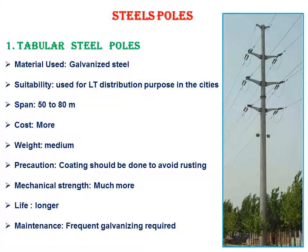Next is the steel pole. One type is the tubular steel pole, commonly seen in houses or city areas. The shape is tapered — the diameter is higher at the bottom and decreases as it goes up. The material used is galvanized steel. It is suitable for low-tension distribution in cities, with a span of 50 to 80 meters.